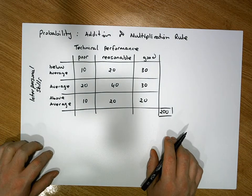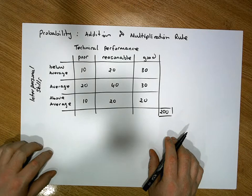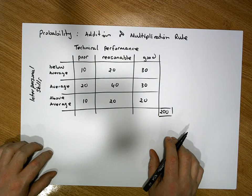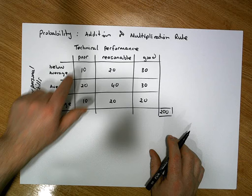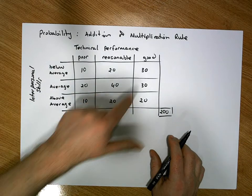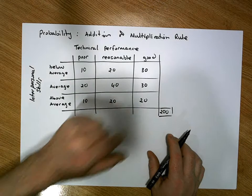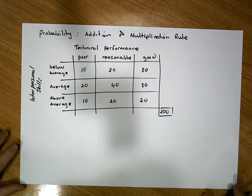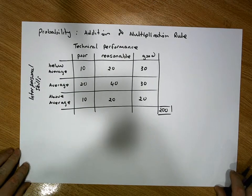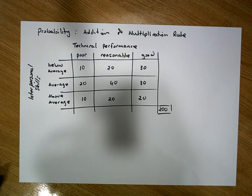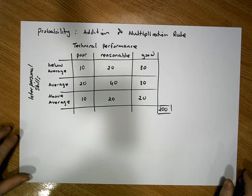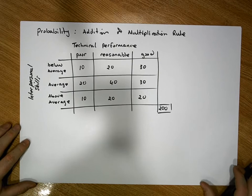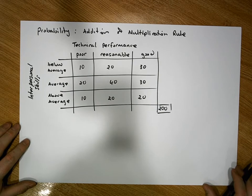Hi guys, this is Jonathan Lambert with the Mathematics Development and Support Service at the National College of Ireland. This short video is a follow-on from two previous videos — one that dealt with the addition rule and the other that dealt with the multiplication rule — and it's going to combine these two rules together to calculate a more complicated probability.